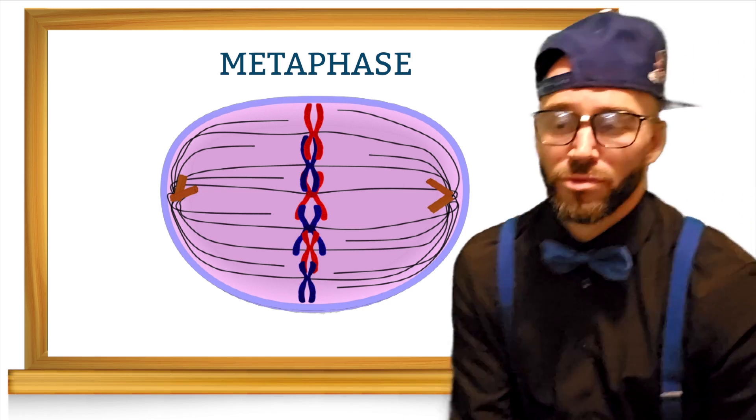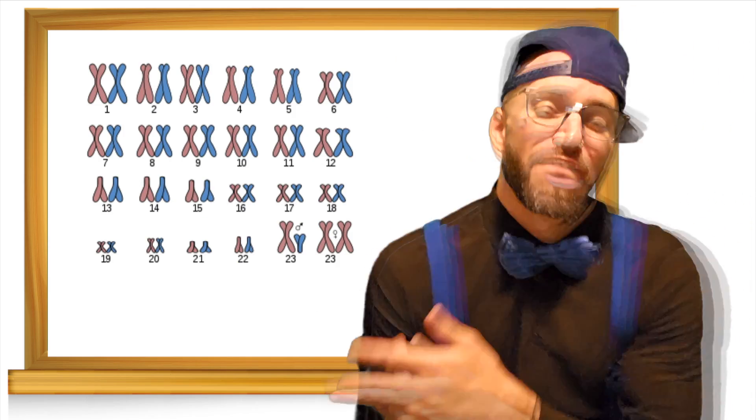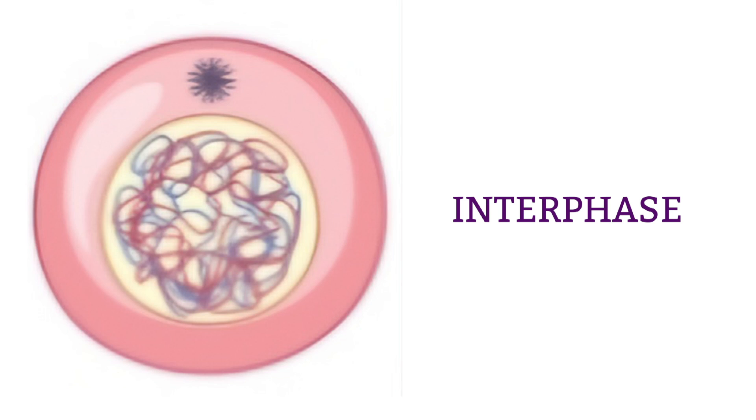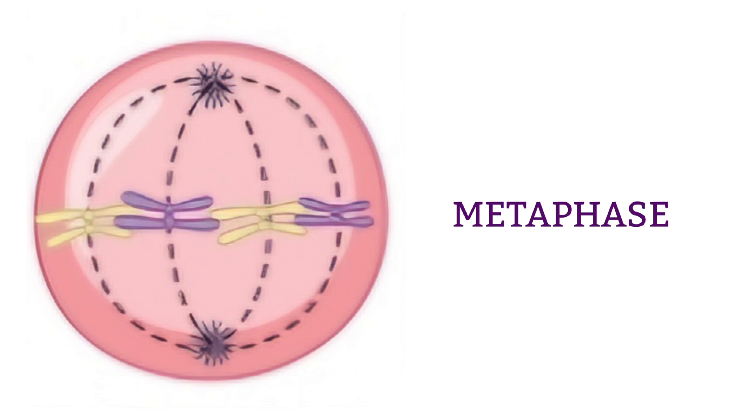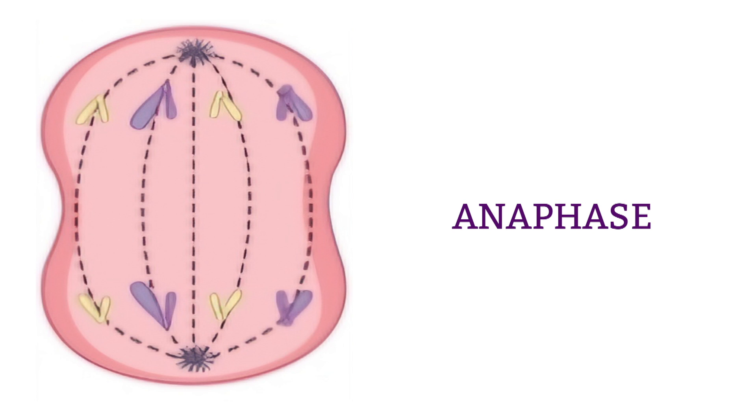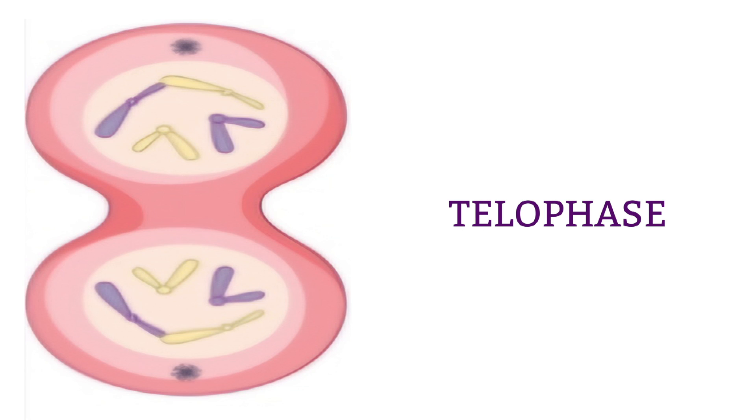23 pairs, 46 chromosomes. Starts with the interphase, collects the DNA, connect the chromosomes, lined up in metaphase. Watch as they pull apart, the X's break away, it's time to say goodbye, we call that telephase.